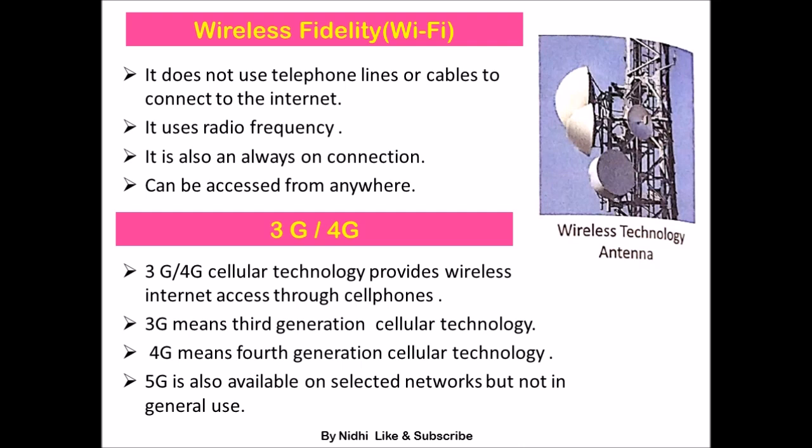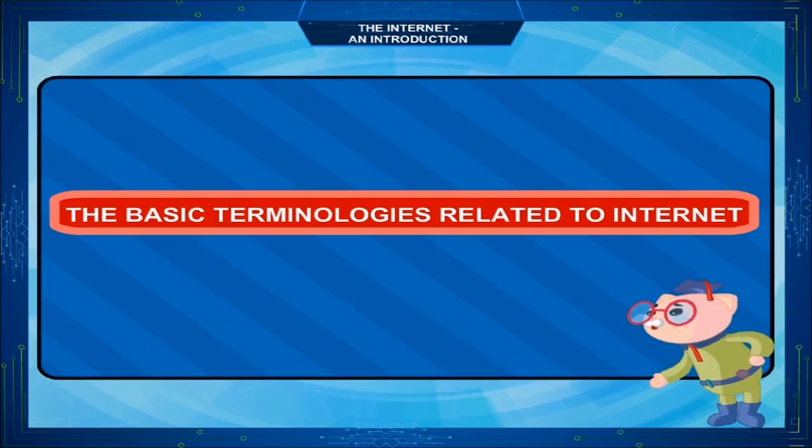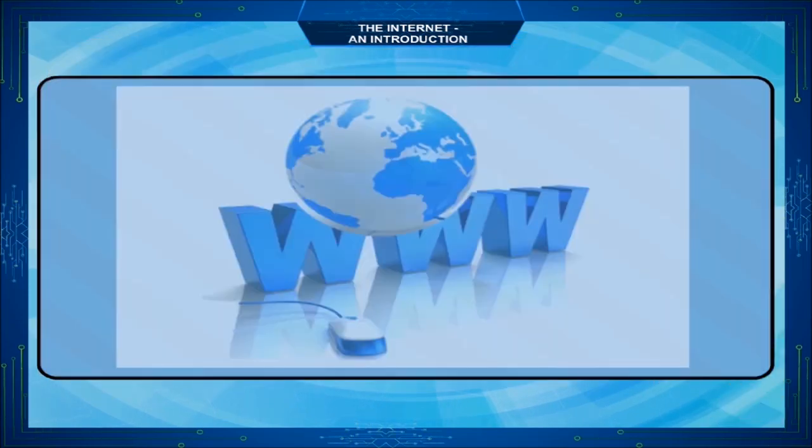Next are 3G and 4G — cellular technologies that provide wireless internet access through cell phones. 3G means third generation and 4G means fourth generation cellular technology. 5G, the fifth generation, is also available but only on selected networks and not in general use. That covers all types of internet connections.